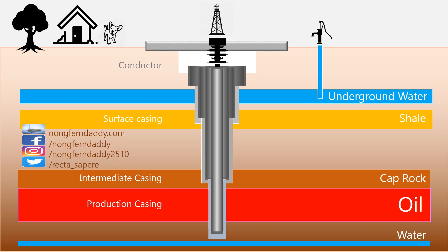Now we have a well ready to take hydrocarbon in. The only problem is that we have casing metal and cement between the hydrocarbon in the formation and the well. What we have to do is to make a flow path by puncturing the casing and cement. To achieve this, we use shaped charge explosives carried by wireline down into the well. This shaped charge explosive is the same as what the military uses to shoot tanks.